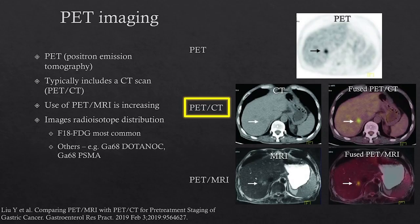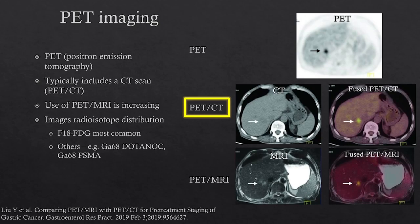PET imaging is positron emission tomography. When the camera acquires the scan, you typically see images in the axial plane. Most cameras nowadays are PET-CT cameras for clinical imaging. A CT image is taken at the same sitting as the PET scan, and the images are overlaid to give the fused PET-CT image. There are also PET-MRI cameras being used more frequently, which acquire MRI images and fuse them to provide fused PET-MRI images.